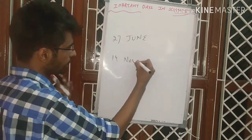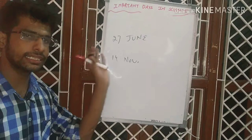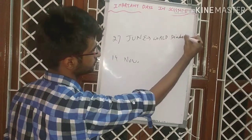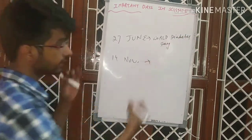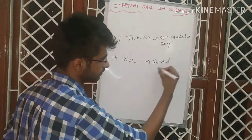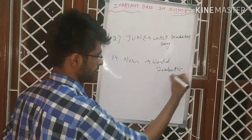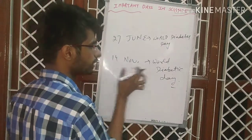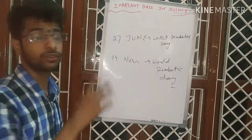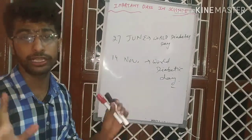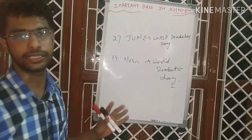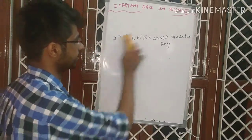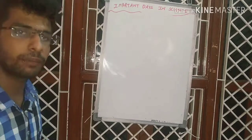27 June is World Diabetes Day, and 14 November is World Diabetic Day. These two are easy to confuse. There is a difference between 'diabetes' and 'diabetic' — you must clarify this before going into the examination. Make sure you do not mix up these two days.